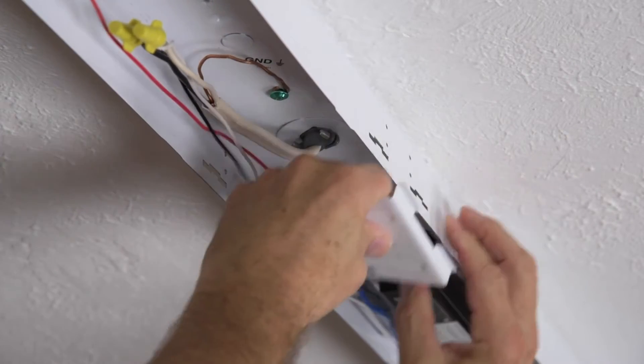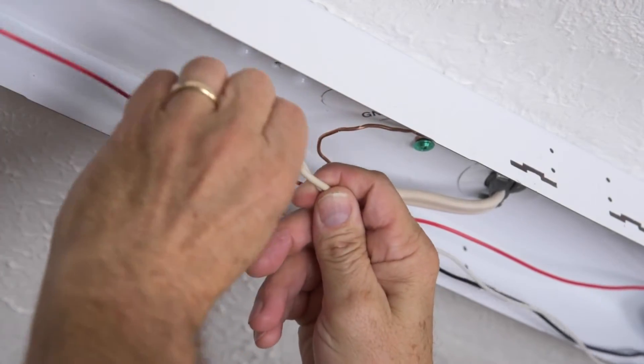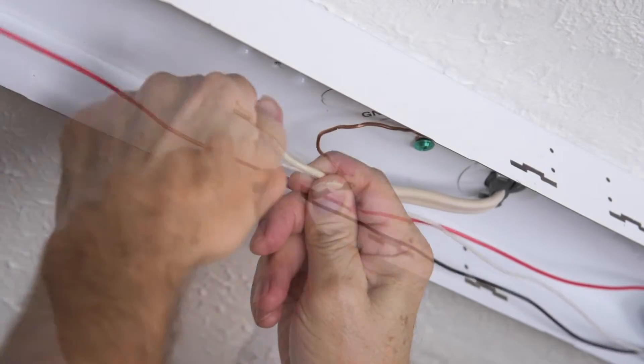Remove the center mount in the middle of the fixture. At this point, we'll disconnect the hot and neutral or black and white wires.